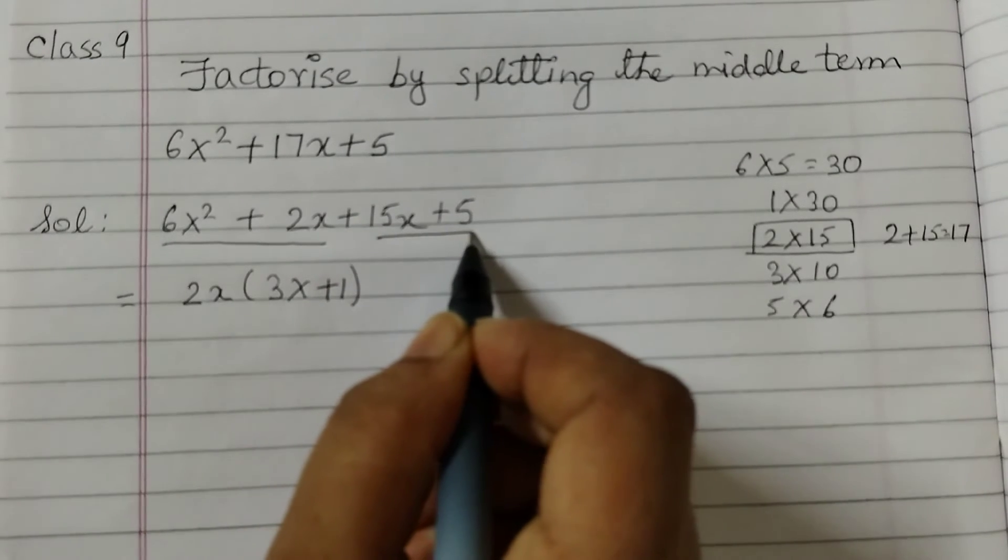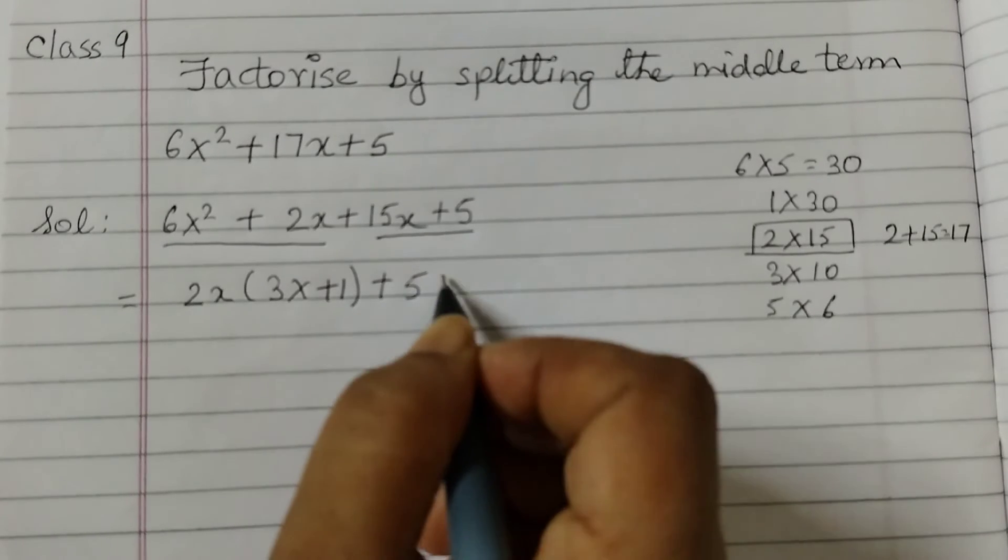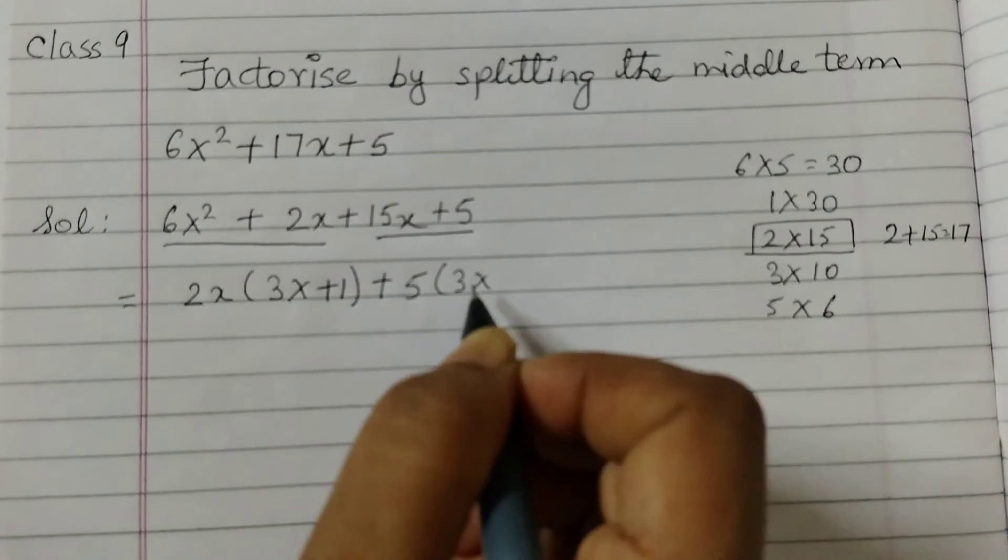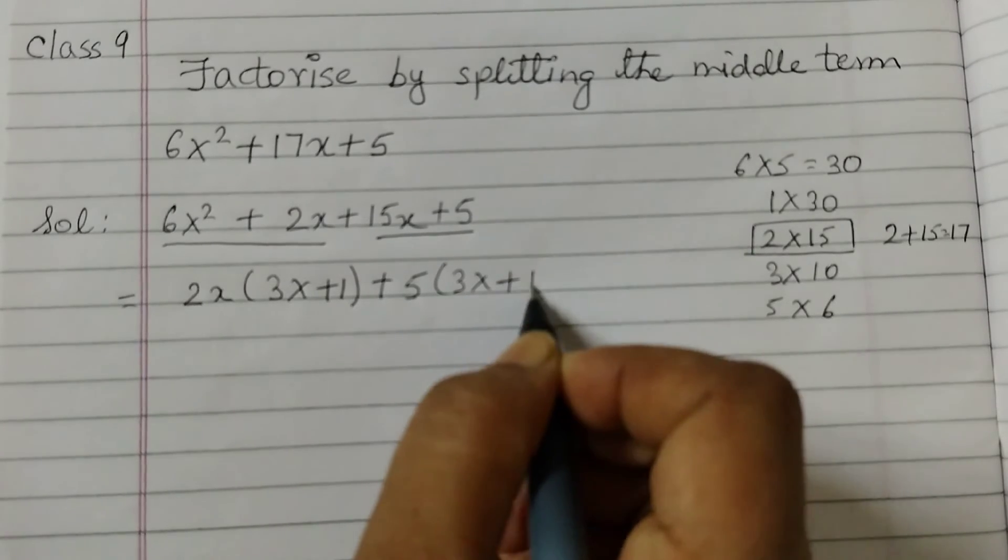Now we will take these two terms. Plus common factor is 5. 3x because 5 times 3 is 15. So 15x plus 1.